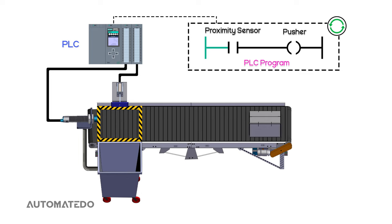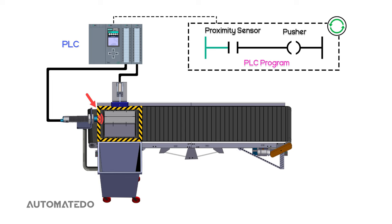So, we can summarize the PLC functions into three steps. One, reading input, which detects the state of the proximity sensor that is connected to the PLC input.